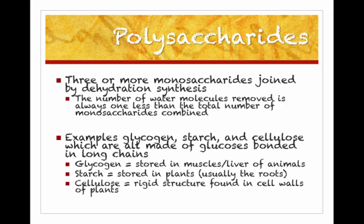Most of the time, figuring out how many waters is pretty easy. But when you're talking about thousands and thousands of monosaccharides bonded together, it can get difficult. If you've got 2,000 monosaccharides bonded together, how many waters are you going to make? You're going to make 1,999. It's always one less than the total number of monosaccharides combined.